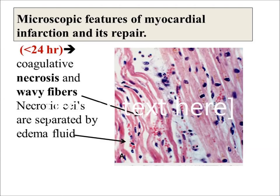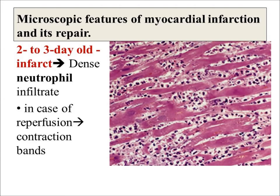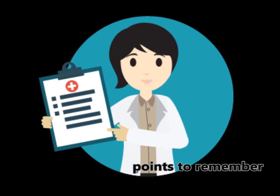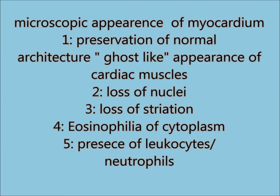To summarize the microscopic appearance of necrotic myocardium, the points to remember are: number one, the outline of normal architecture is preserved — called ghost-like appearance; number two, loss of nuclei; number three, loss of striation; number four, eosinophilia of cytoplasm; and number five, presence of leukocytes and neutrophils.